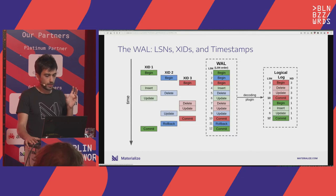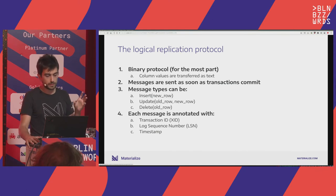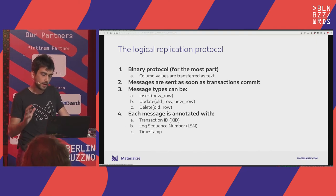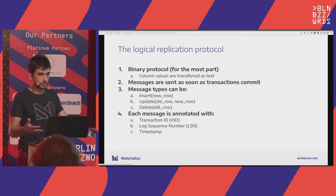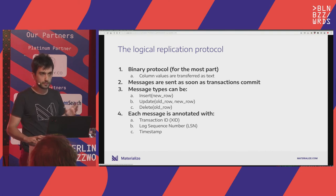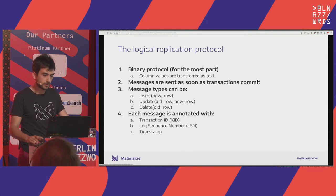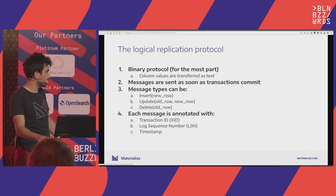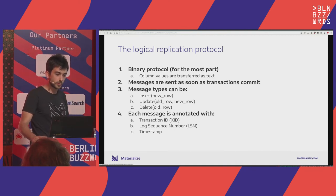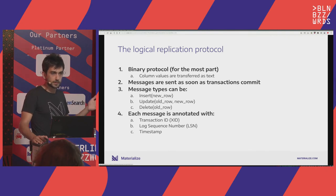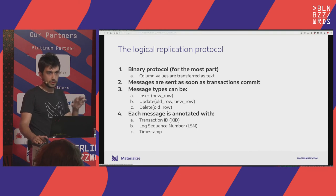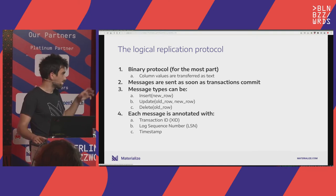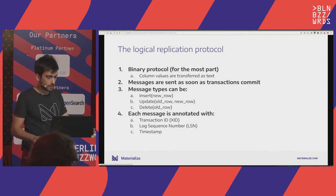A big part of the implementation was figuring out the replication protocol and what LSN numbers to use. The other part was adding support for parsing the replication protocol and connecting through the special connection mode needed in the Rust Postgres library — Materialize is written in Rust. This protocol is mostly binary, and you get three types of messages: inserts with the new data, updates with the old and new data, and delete messages. It looks very similar to a Debezium message with before, after, and metadata.